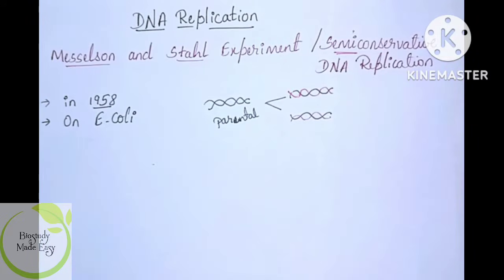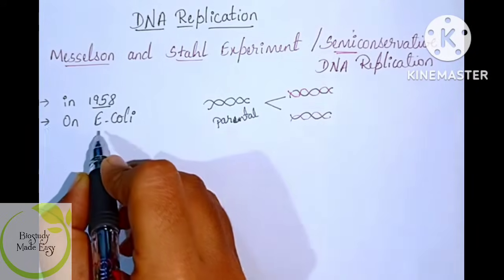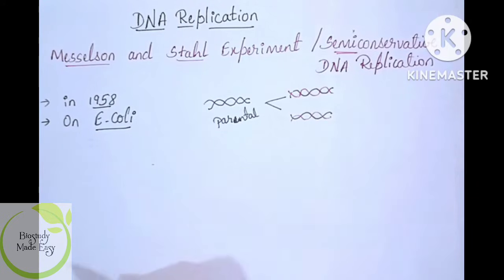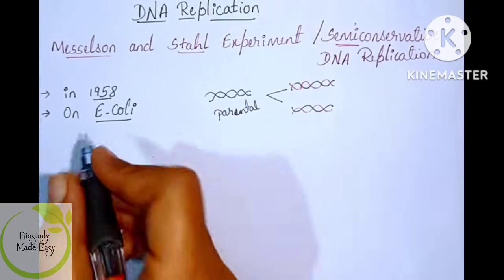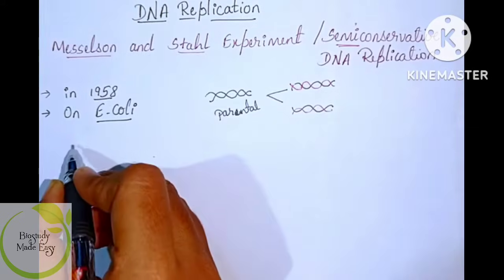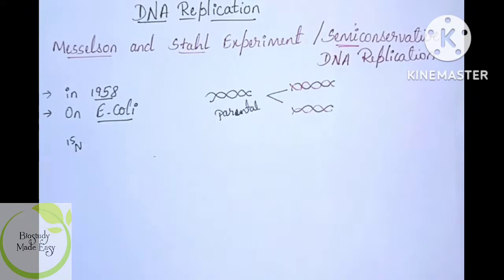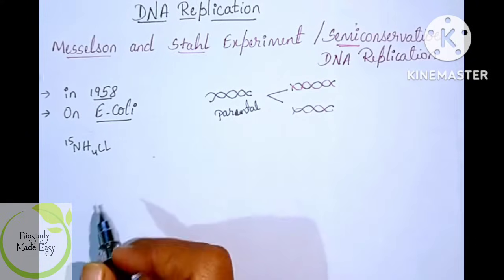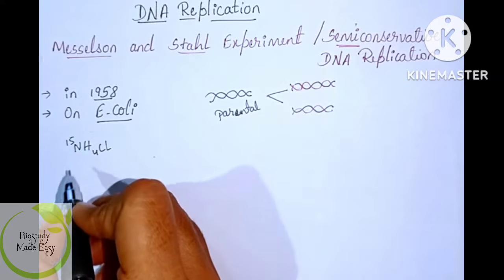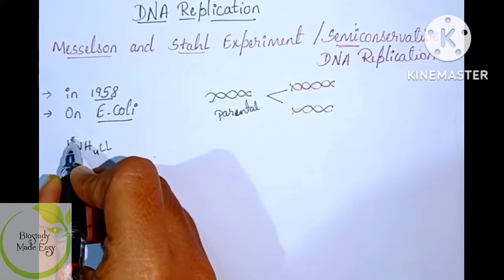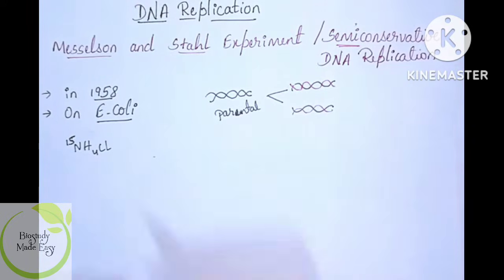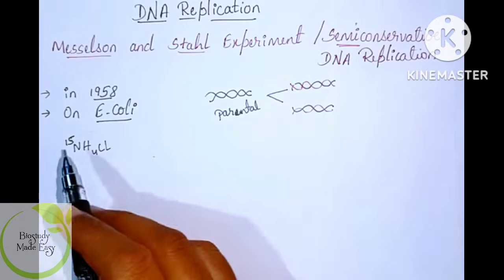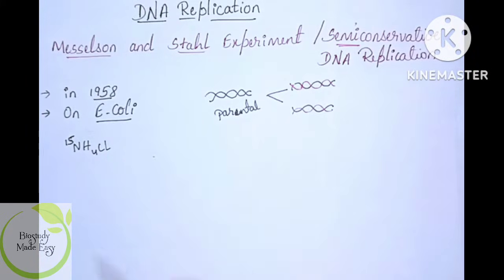In 1958, Meselson and Stahl conducted this experiment using E. coli bacteria. They grew E. coli in a medium called N15 NH4Cl — that is, ammonium chloride containing the heavy nitrogen isotope N15. N15 has a greater atomic mass than the normal nitrogen isotope N14.